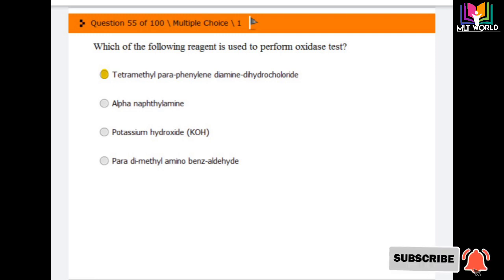Question number 55: Which of the following reagents is used to perform oxidase test? Options are tetramethyl paraphenylenediamine dihydrochloride, alpha-naphthylamine, potassium hydroxide, and para-dimethylaminobenzaldehyde. The correct answer is first option. Tetramethyl paraphenylenediamine dihydrochloride is the reagent used to perform the oxidase test.